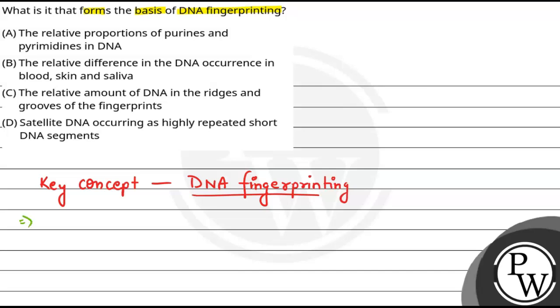DNA fingerprinting involves identification of differences. We have to find out differences in some specific regions in DNA. These specific regions in DNA, what do we call them?